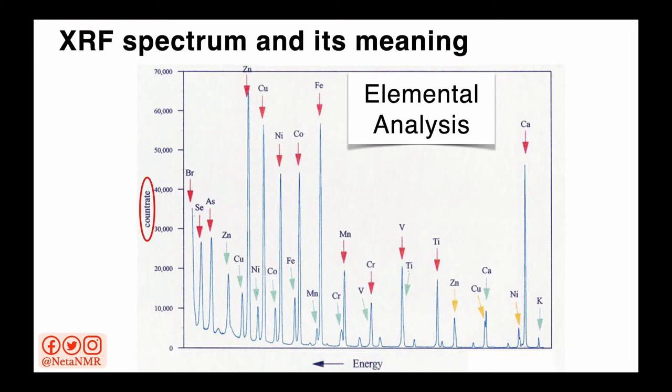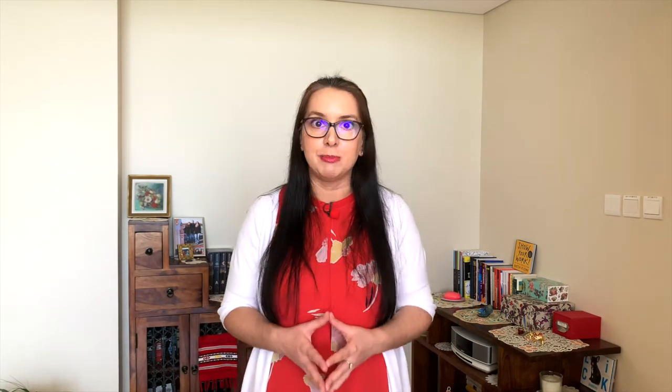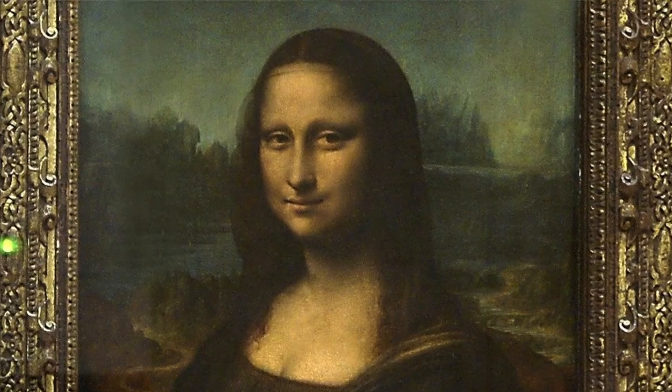Moreover, by analyzing the intensities of each peak, we can obtain quantitative information about the different elements in the sample. We can find out how much of each element is present. And once we know which elements we have in our sample and how much of each, we can put this information together to identify the material. This is how we can learn which materials were used in creating tangible heritage, like paintings,